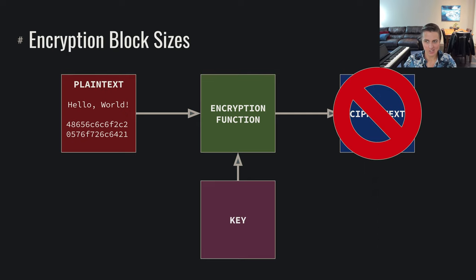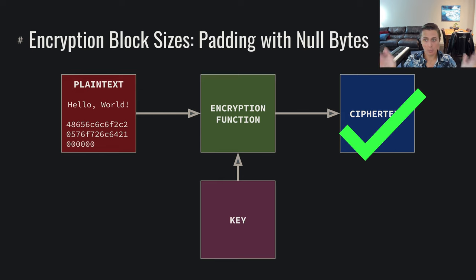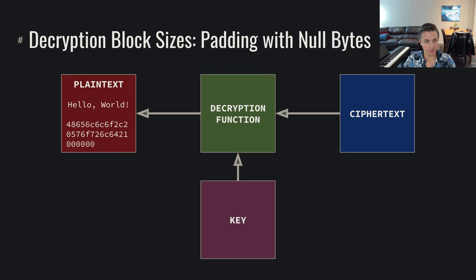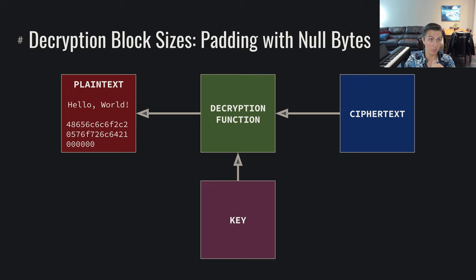The obvious solution is to just pad it with some null bytes, bring it up to 16 bytes, and encrypt it. But this is a problem when we go to decrypt: we successfully decrypt and get null bytes at the end, but the person decrypting doesn't necessarily know how many null bytes were padded. Maybe those three null bytes were intentionally part of the data, or maybe just one was — we're not really sure.